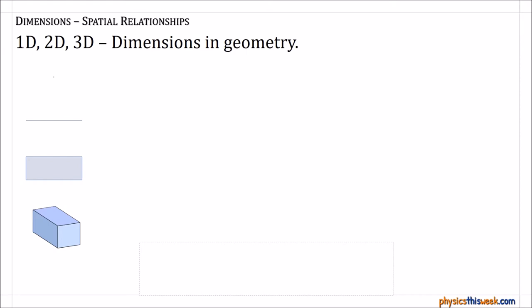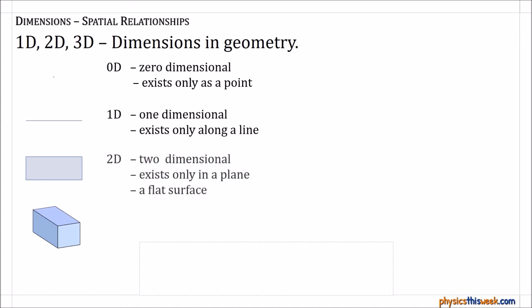So an object that has zero dimension would be just a point, whereas a line has one dimension. If you have a surface, in other words you take that line and spread it out in a direction perpendicular to the original line, you get a two-dimensional plane, and that is literally a flat surface. Now if we expand it in the other direction, we get a three-dimensional object.